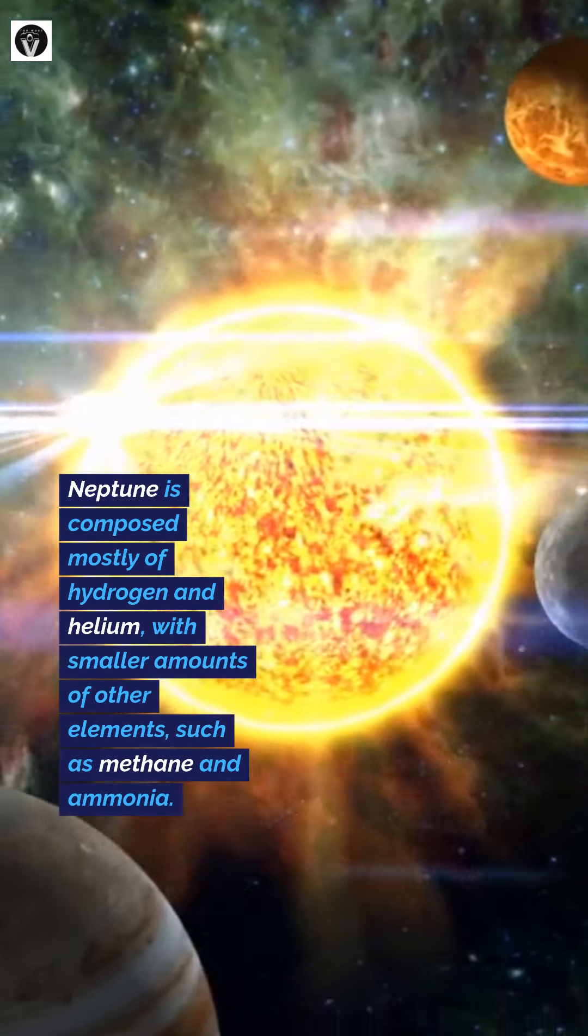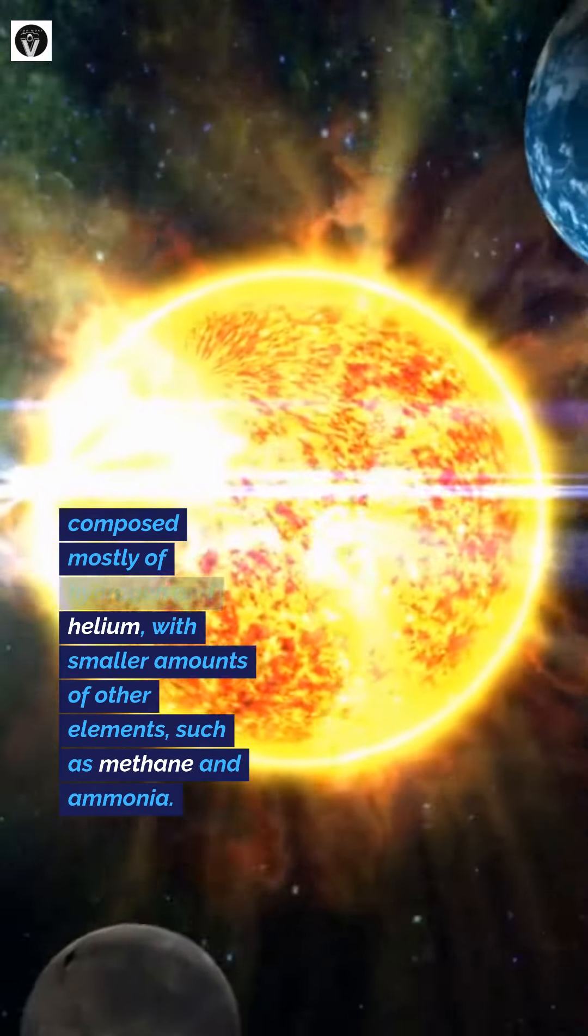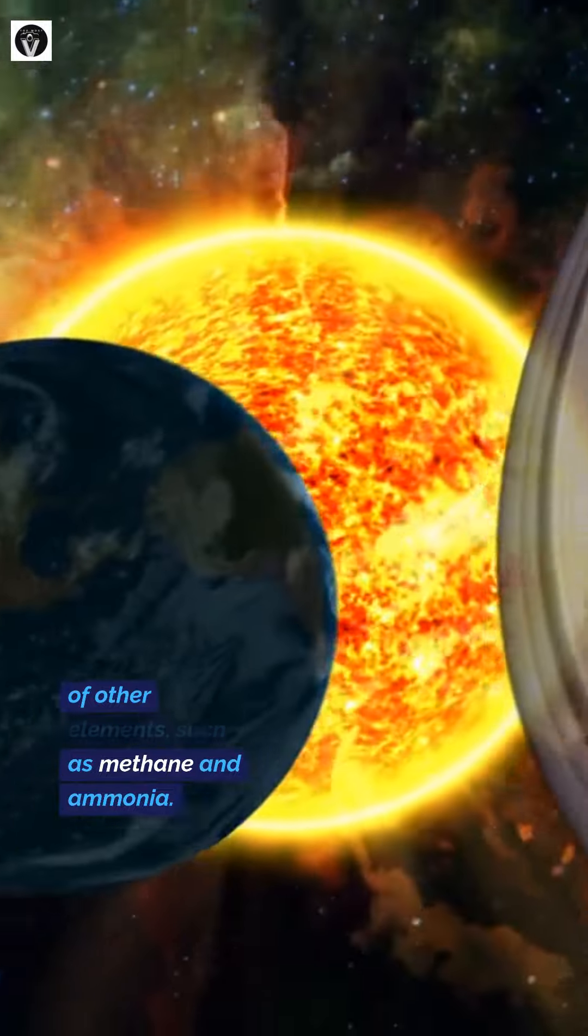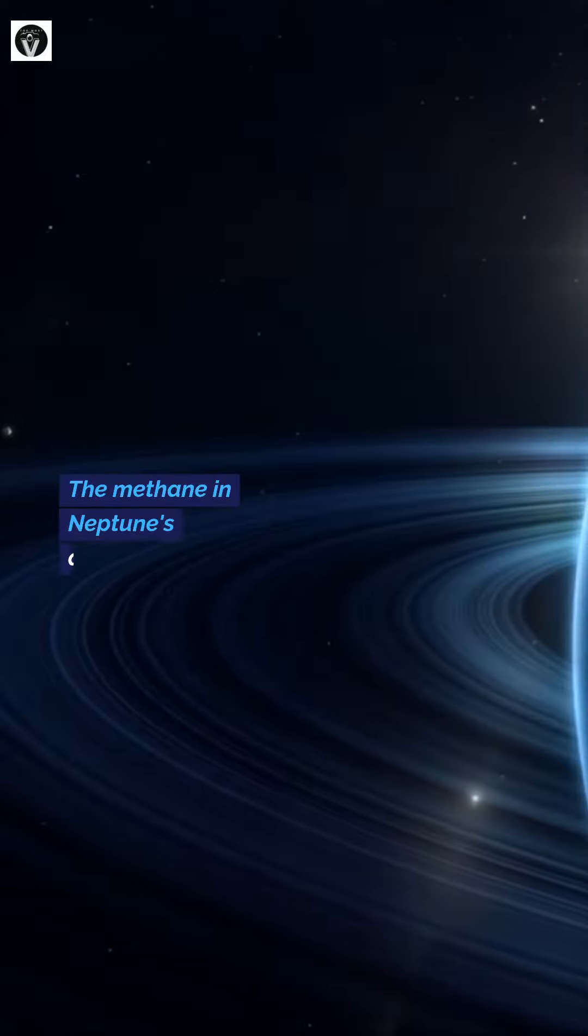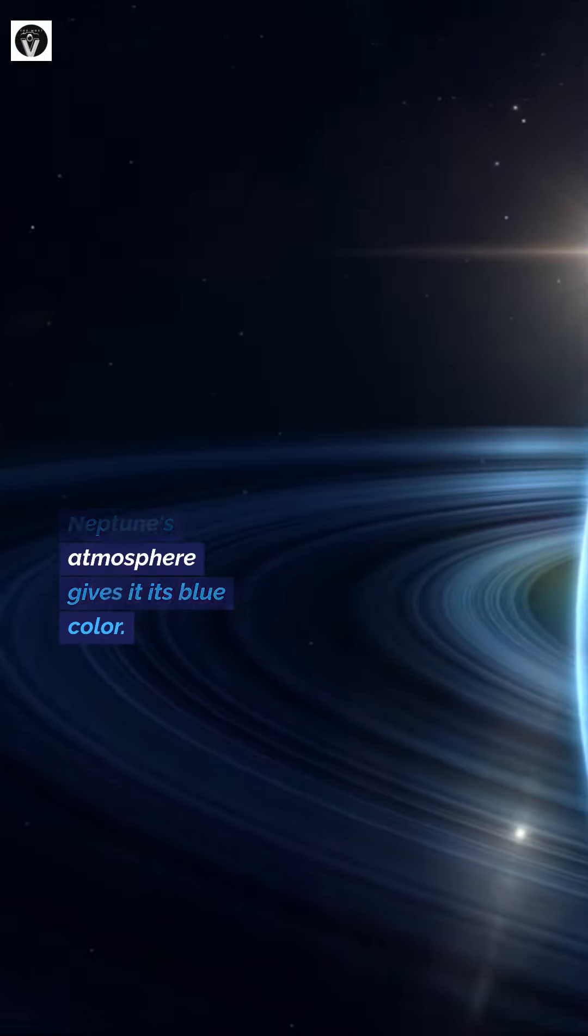Neptune is composed mostly of hydrogen and helium, with smaller amounts of other elements such as methane and ammonia. The methane in Neptune's atmosphere gives it its blue color.